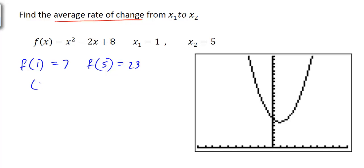So that means we have the point (1, 7), and when x is 5, y is 23. On the graph, when x is 1 we're up at 7, and when x is 5 we're up at 23. We want to find the average rate of change from x1 to x2.